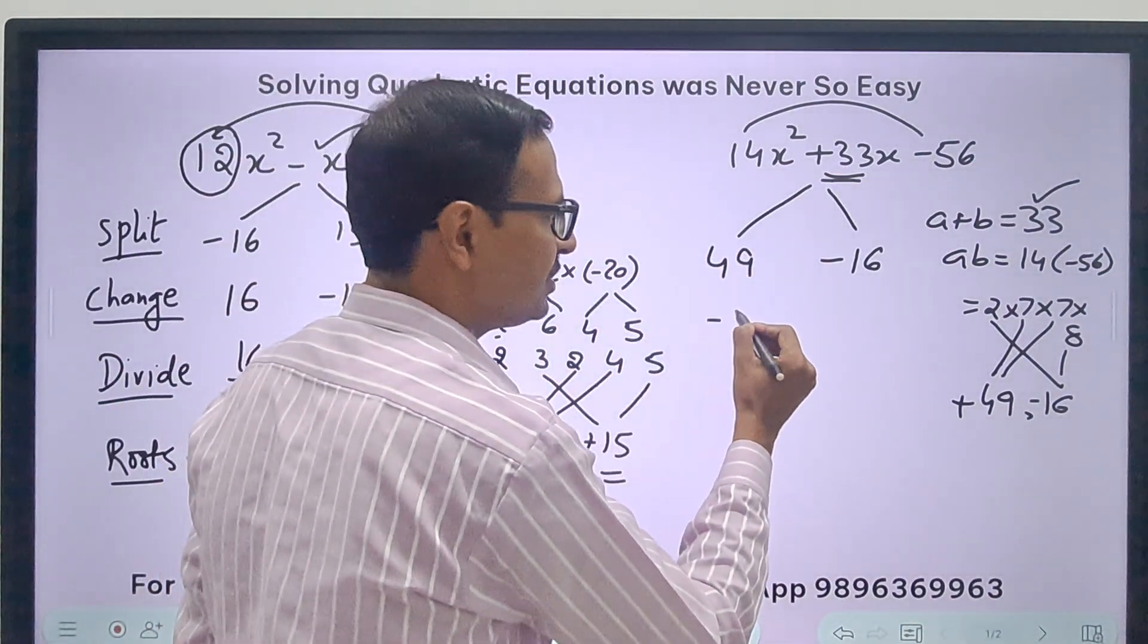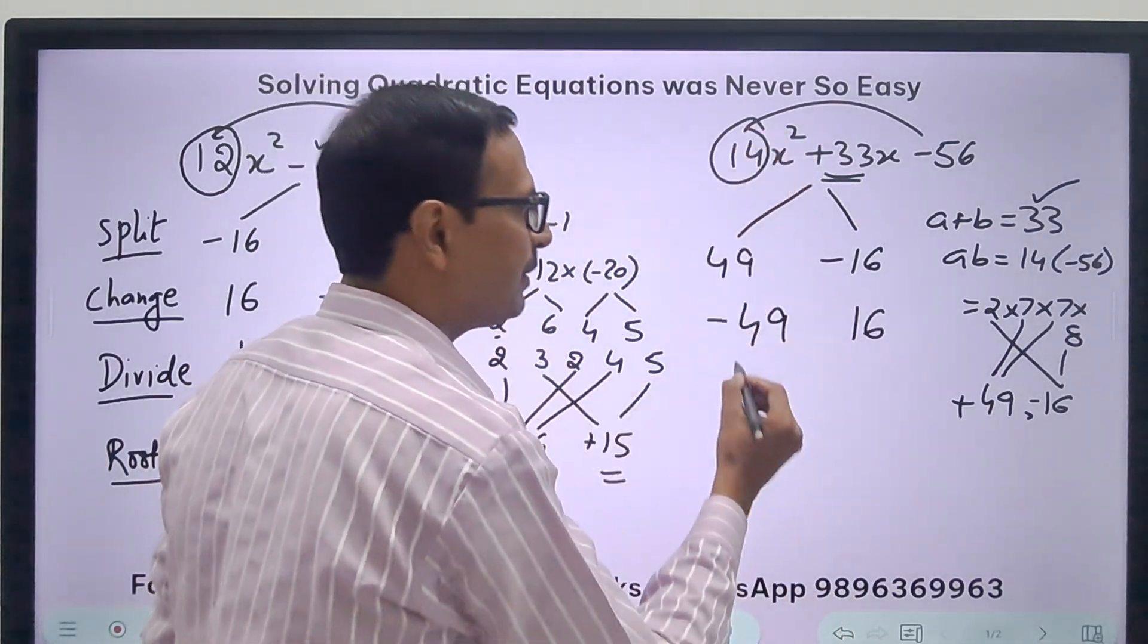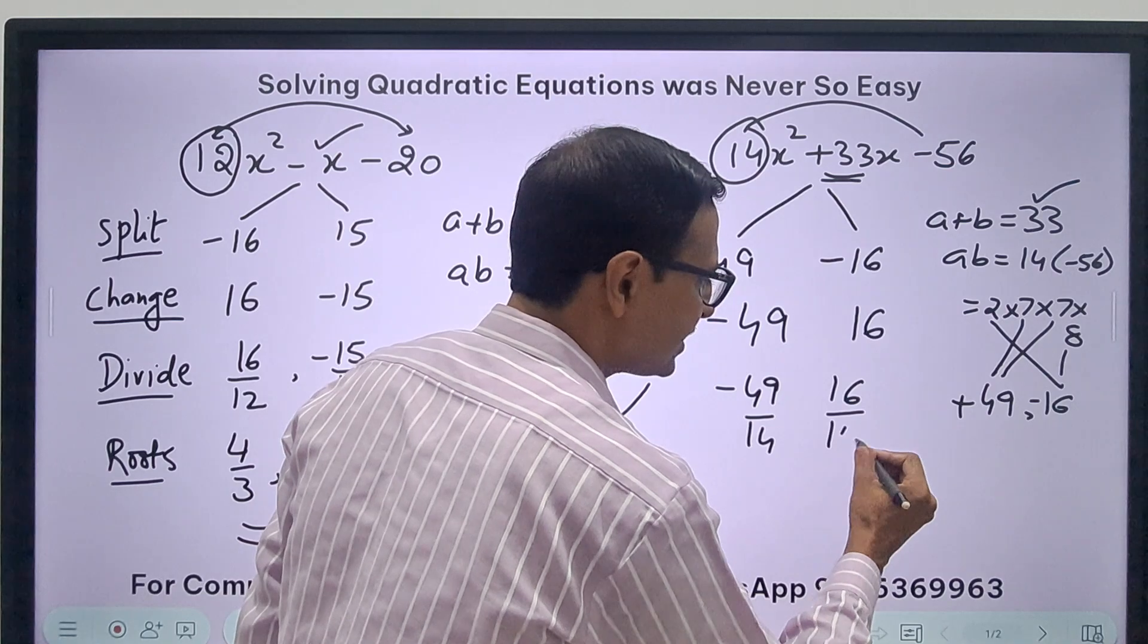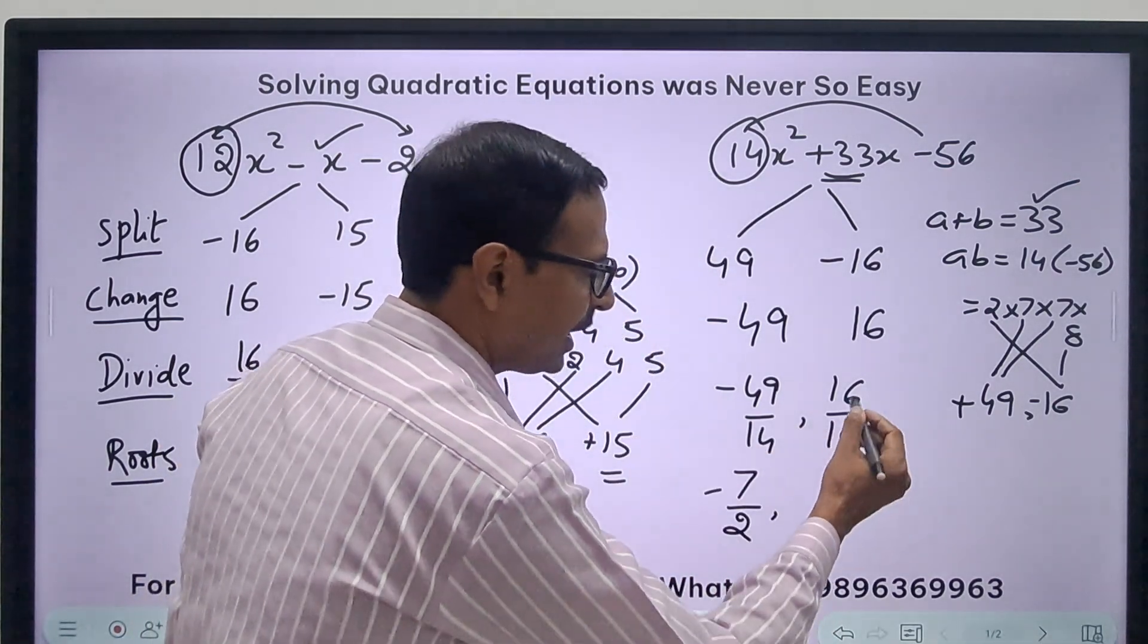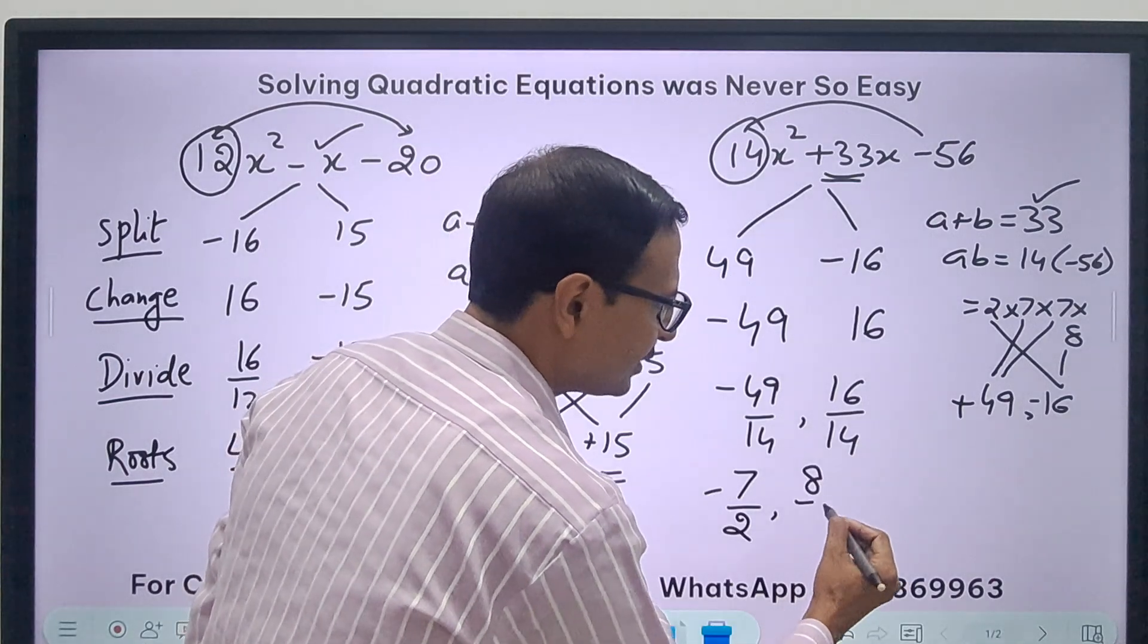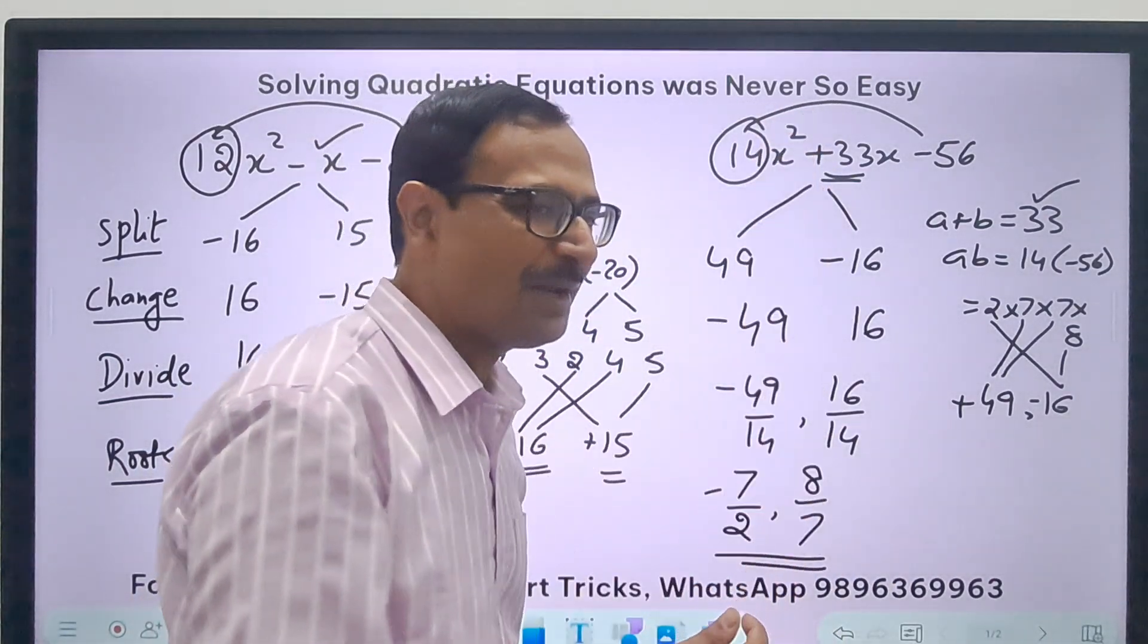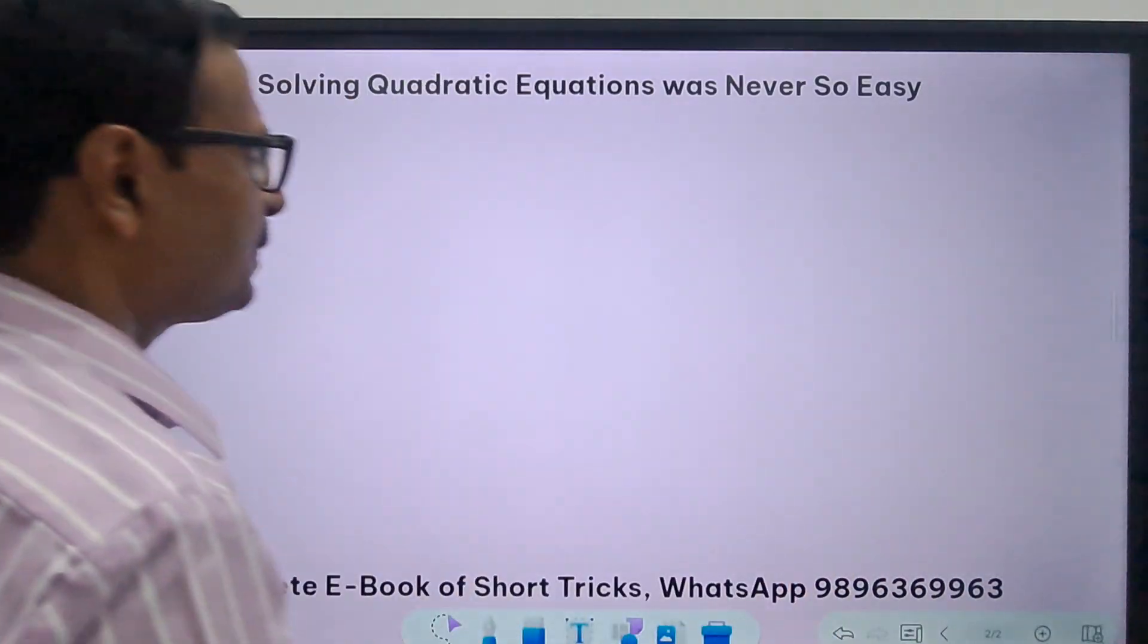Change. Change the signs. Divide. Divide by 14, and you get the roots 7 times and 7, 2 times, and this is 8 upon 7. There we go, the roots of the quadratic equation have been obtained. Let's try and build up the speed now.